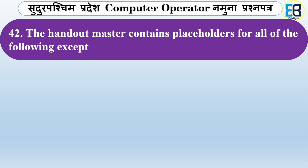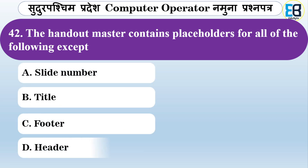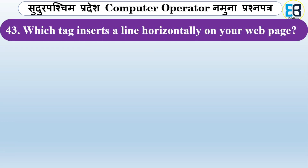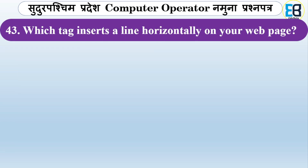The handout master contains placeholders for all of the following except which one? The handout master contains placeholders like logo and other items, but check which one is excluded.